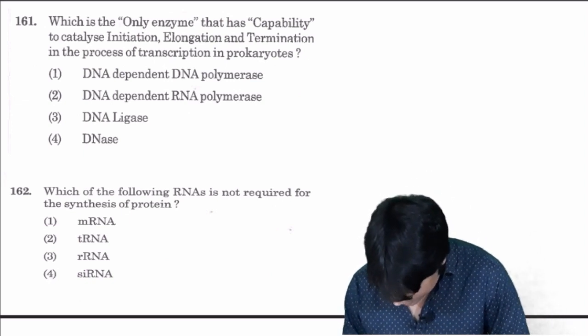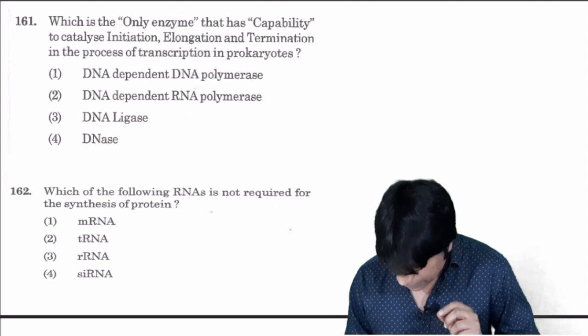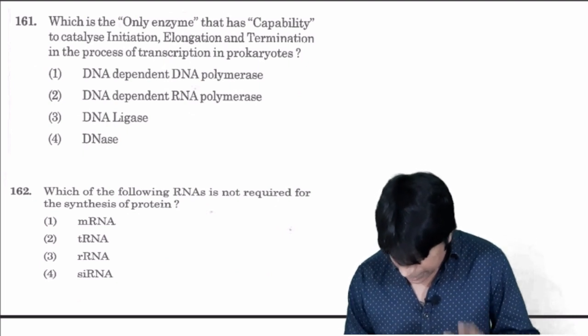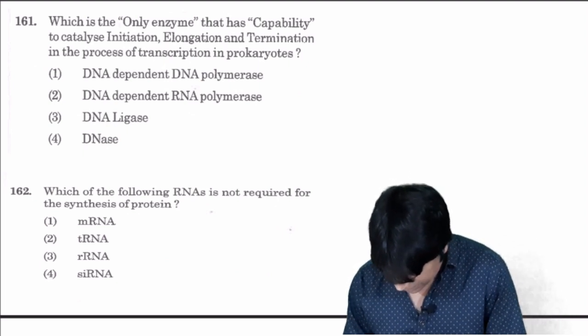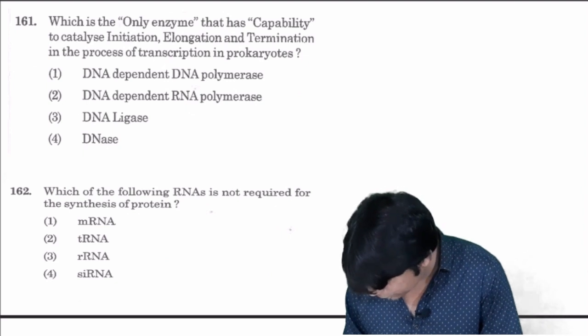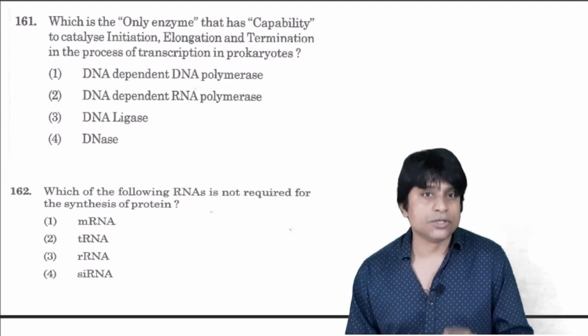Which is the only enzyme that has the capability to catalyze initiation, elongation, and termination in the process of transcription in prokaryotes? This is DNA dependent RNA polymerase, answer is two.